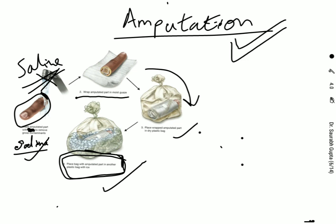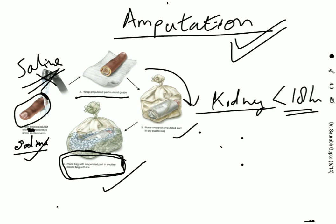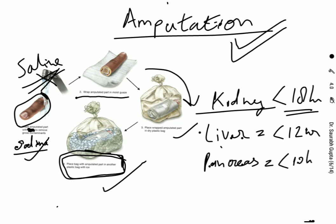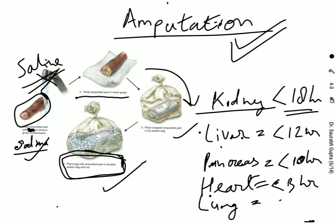There are optimal cold storage times for organs: for kidney, it is less than 18 hours; for liver, less than 12 hours; for pancreas, less than 10 hours; for heart, less than 3 hours; and for lung, less than 3 hours. These are the optimal storage times up to which these organs can be stored.